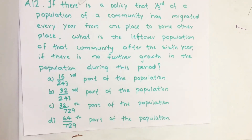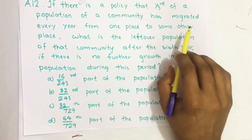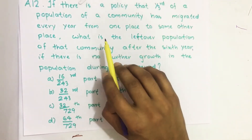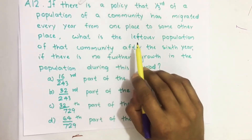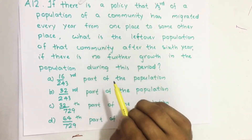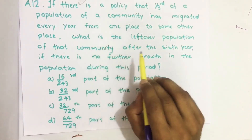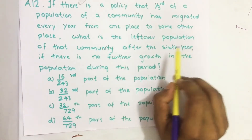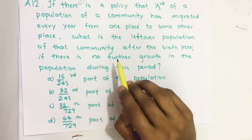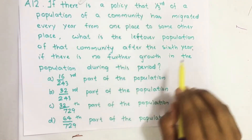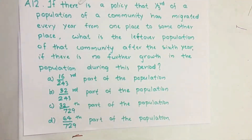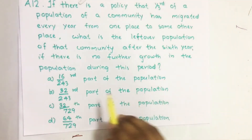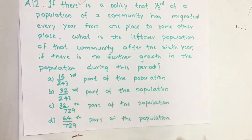If there is a policy that one third of the population of a community has migrated every year from one place to some other place, what is the leftover population of that community after the sixth year if there is no further growth in the population during this period?